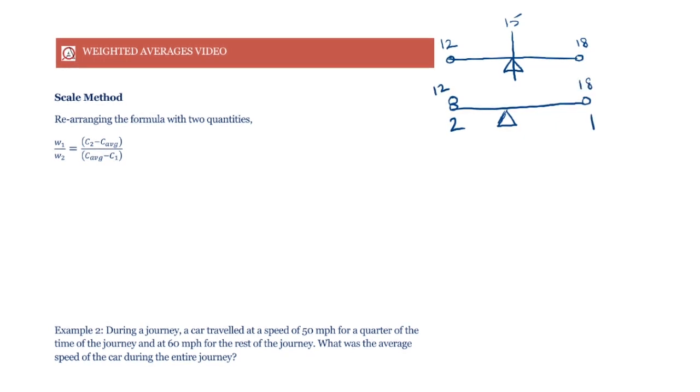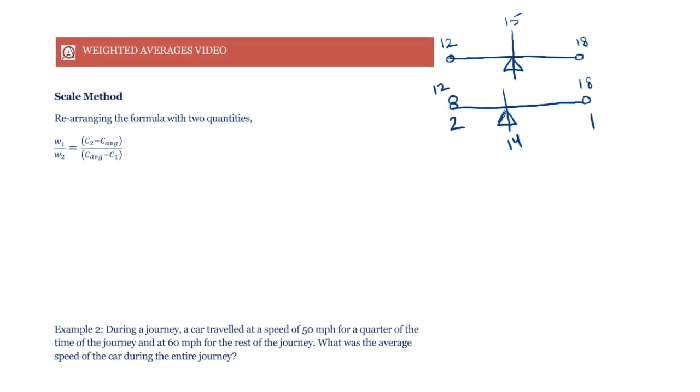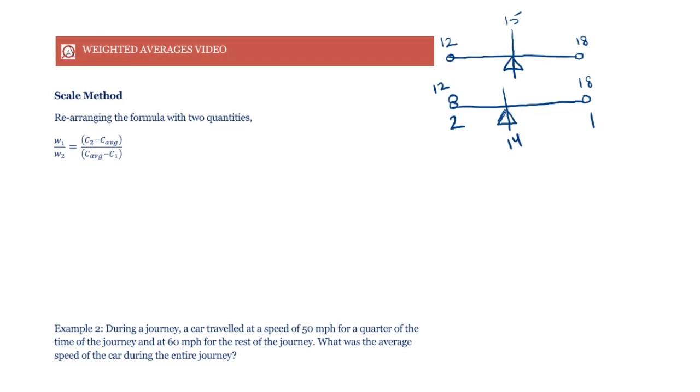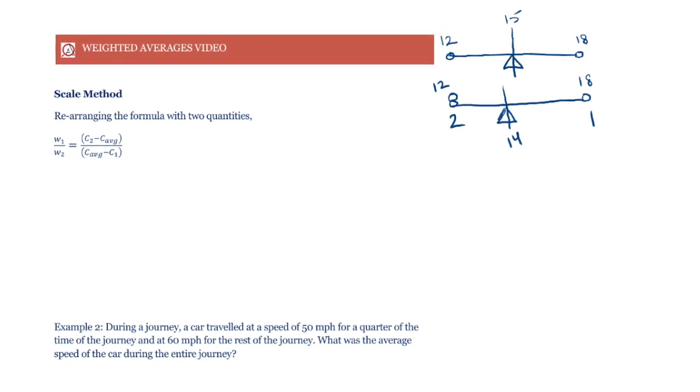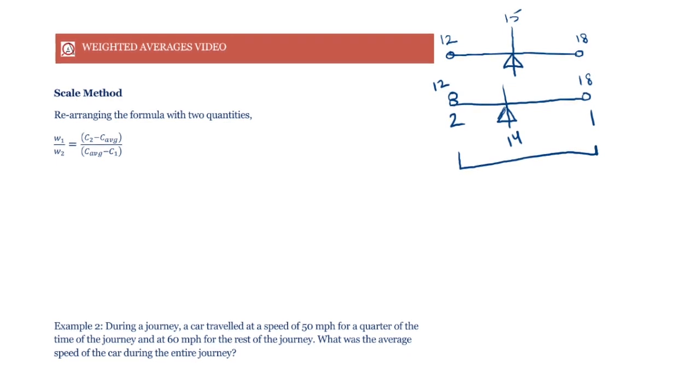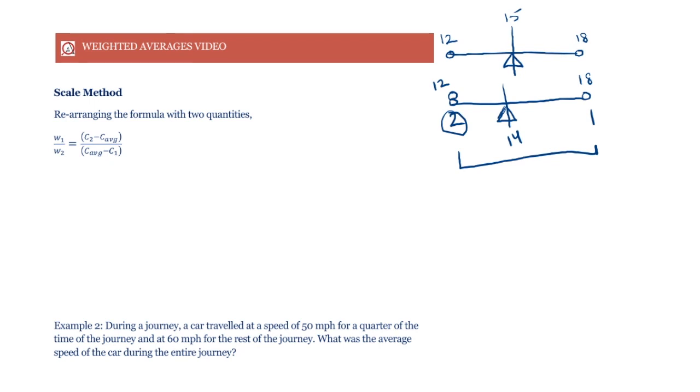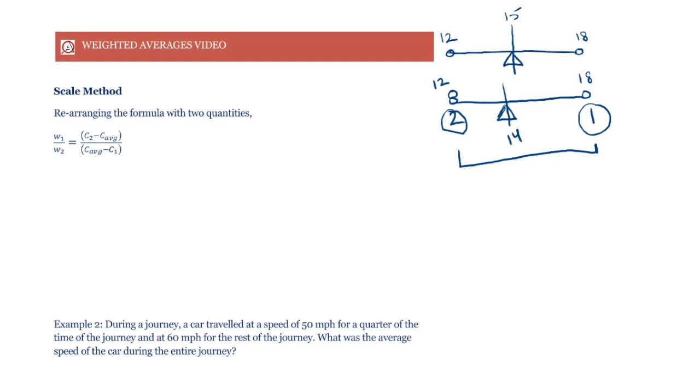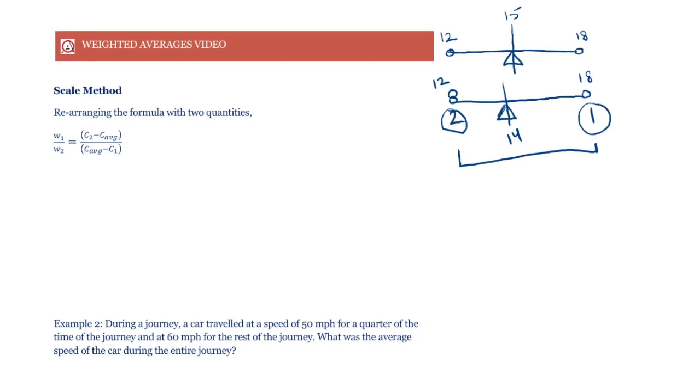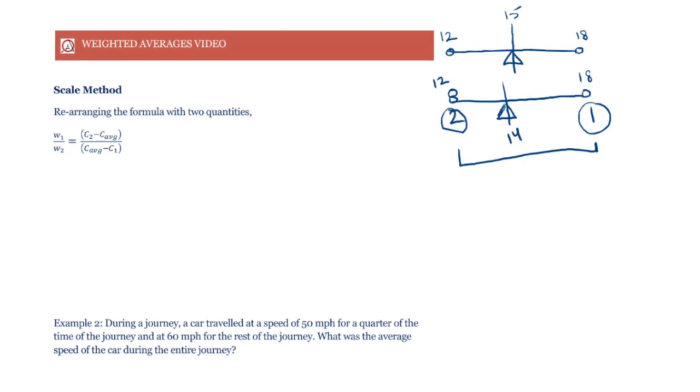Basically, the distance between 12 and the average reduces, and the distance between 18 and the average increases. This distance between 12 and 18 is split in the same ratio as the ratio of the weights, but inverse, because the average has to be closer to the higher weight.